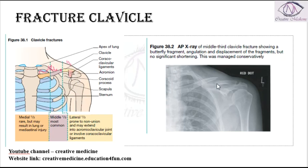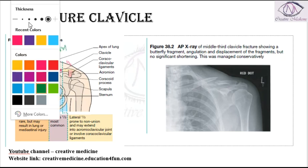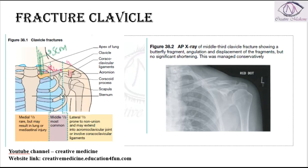This picture shows a fracture of the middle one-third of the clavicle. In such fractures, the clavicle can be displaced or undisplaced. The medial fragment is pulled upward by the sternocleidomastoid muscle, while the lateral fragment is pulled downward by the pectoralis muscle and other muscle groups.